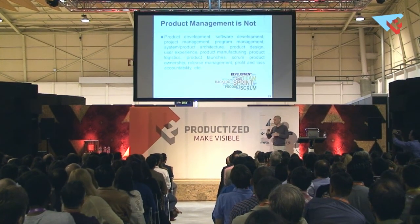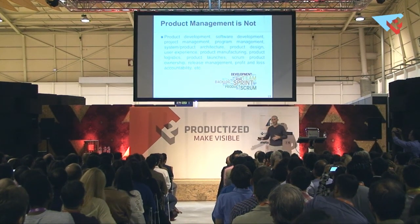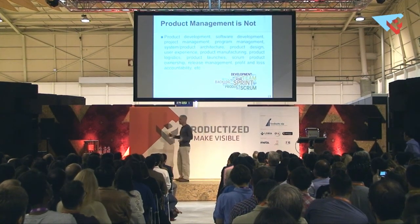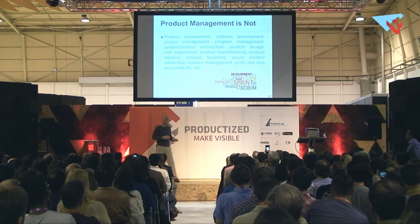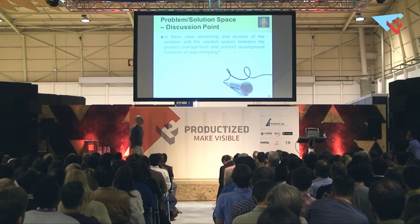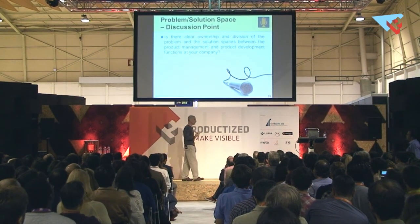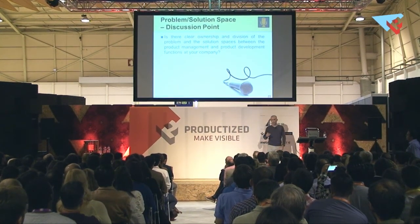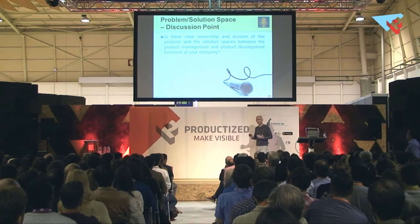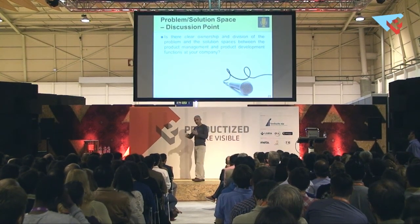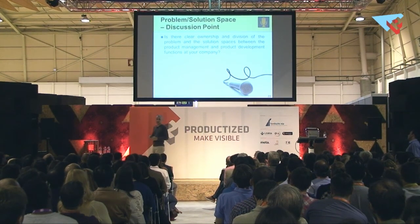With software companies in the mid-2000s transitioning to Agile development methods and Scrum, product management people were drawn back to the 'disco days of the 70s' — under engineering again. Product development, product management, program management — all these things have become confused because of misconceptions, misunderstandings, politics, and ignorance. Think about whether your company has a clear division between the problem space and solution space, with a clear interface between product development and product management.